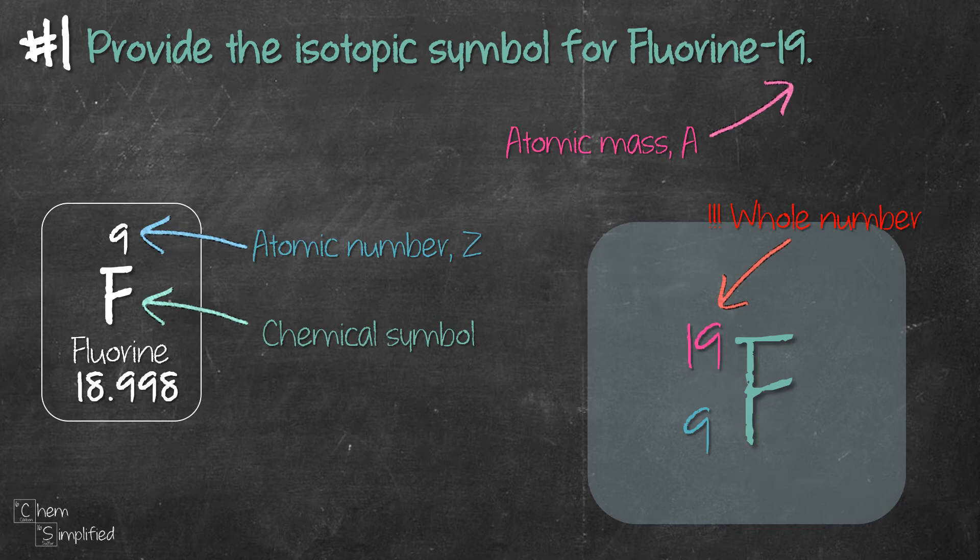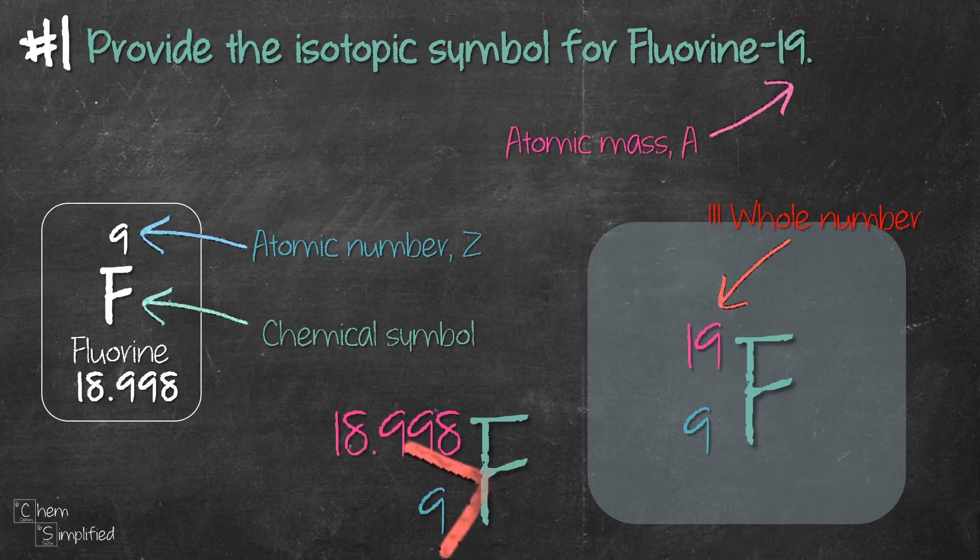So meaning to say you should write 19 for fluorine-19's atomic mass, not 18.998 which is the atomic mass you can find in the periodic table, because that mass represents the mass of the other isotopes that are present for fluorine.